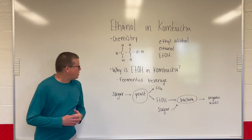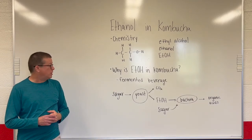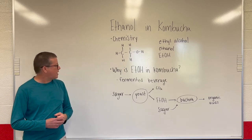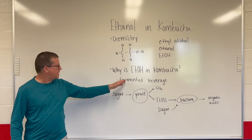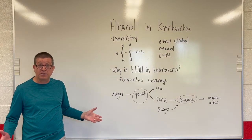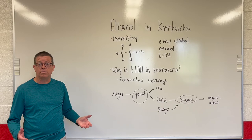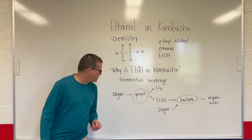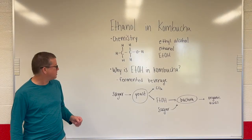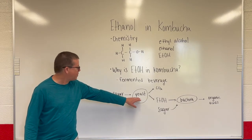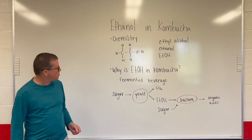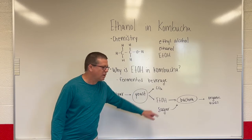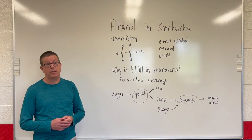Why do we actually find ethyl alcohol in kombucha — where does it come from? We have to go back to the fact that kombucha is a fermented beverage. Any fermented food or beverage involves fermentation by yeast. In yeast fermentation, sugar is taken up by yeast, and the yeast produces carbon dioxide gas and ethyl alcohol. That's the same process that happens in beer brewing.